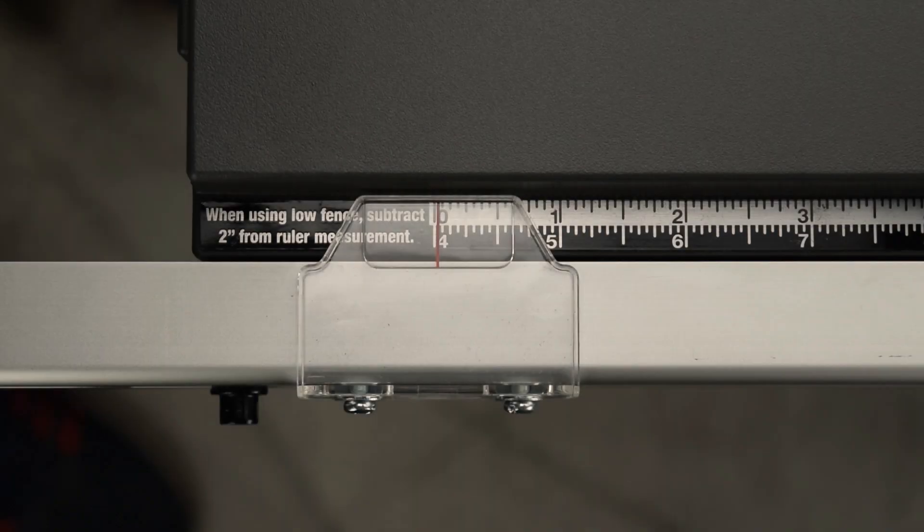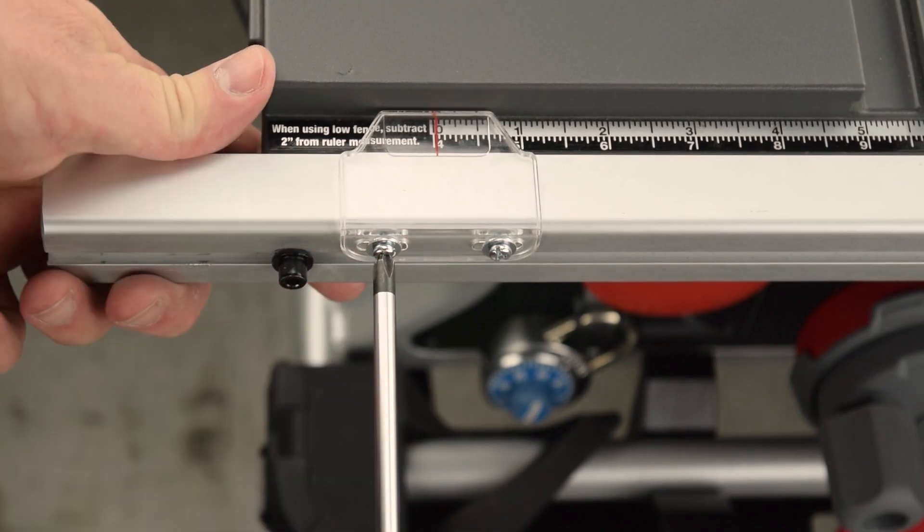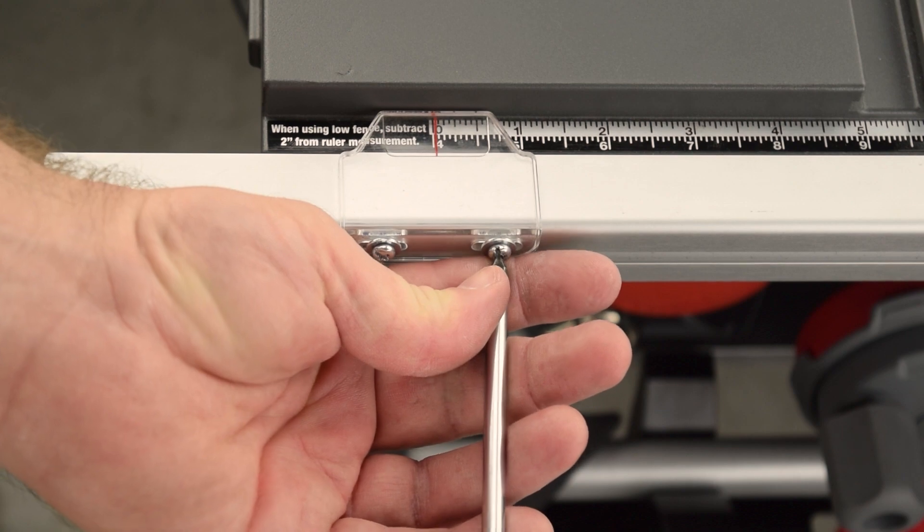In this example, the position indicator is slightly off. Use the Phillips screwdriver to loosen the two screws. Just break them loose.